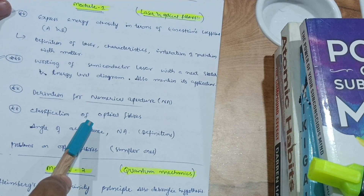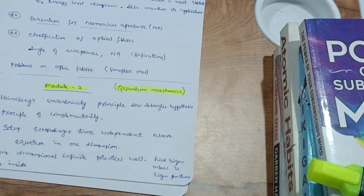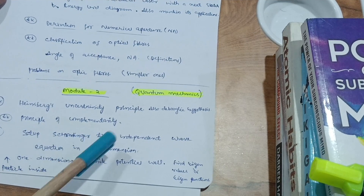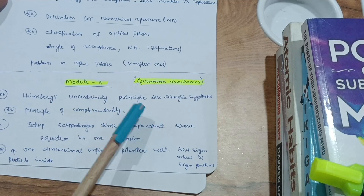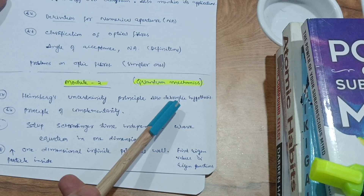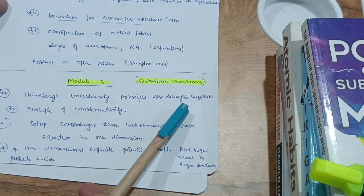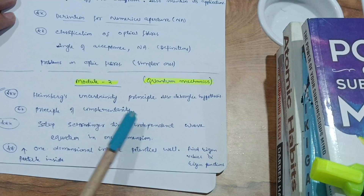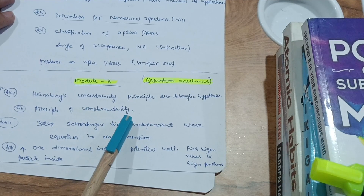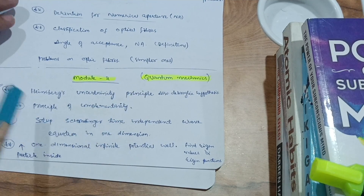Module two is called Quantum Mechanics. You have to focus on Heisenberg's uncertainty principle — they will definitely ask this. Also focus on the de Broglie hypothesis; while not the most important, you cannot leave it as it is part of the syllabus and a concept from 12th class. The principle of complementarity is a new addition to this module, so focus on that question as well.